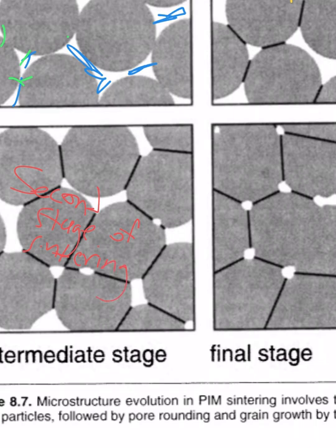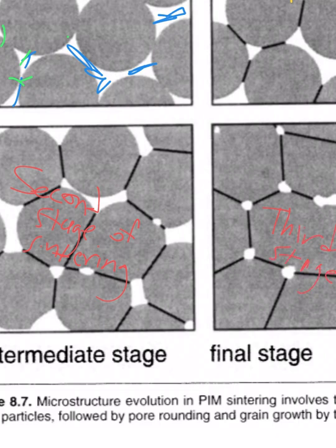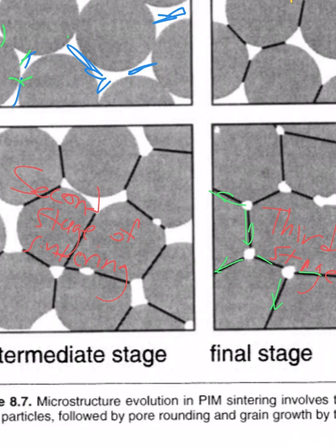Looking at this two-dimensional microstructure and thinking about it in three dimensions, in the second stage of sintering the pores are still open — like a sponge squeezing out the atmosphere between those particles. Then in the third stage, we're no longer squeezing air out because the pores are no longer open to the surface. All these pores are cut off, and we are reliant very critically on diffusion along the grain boundaries.